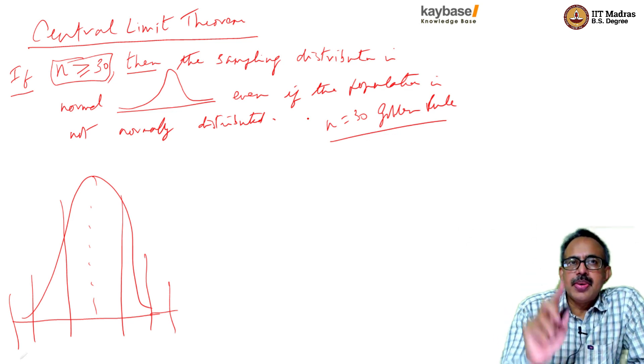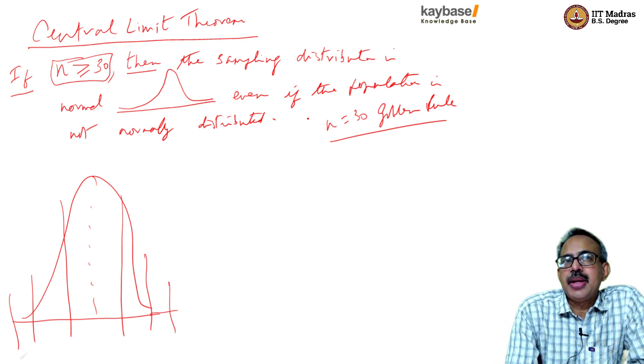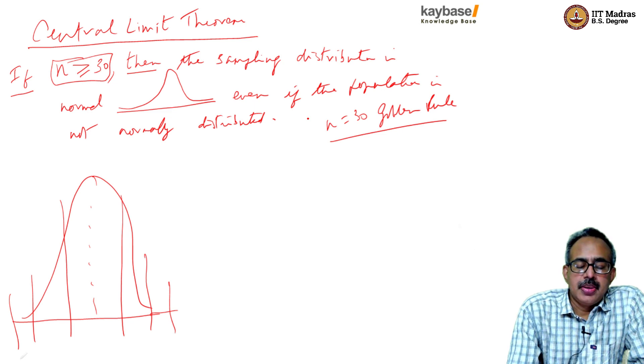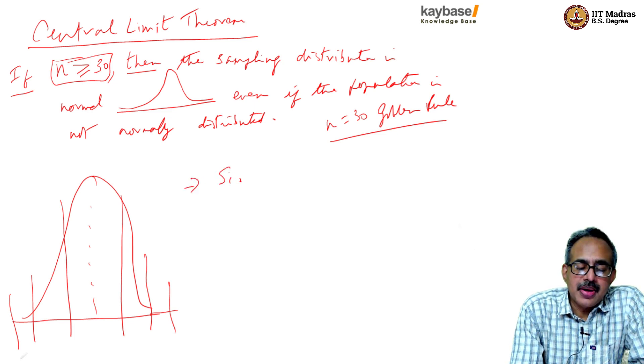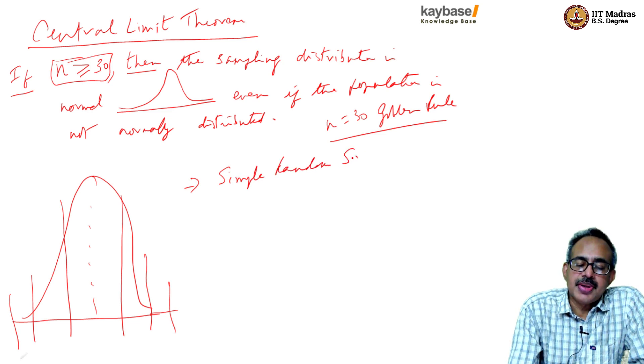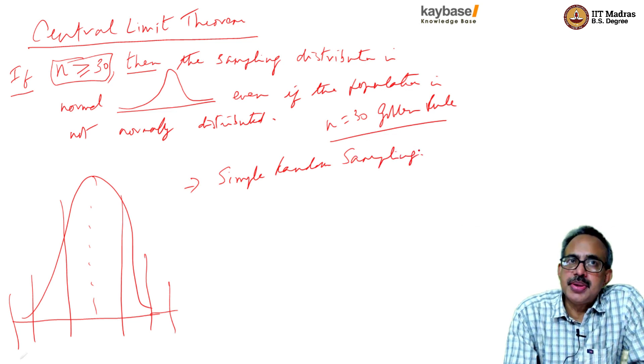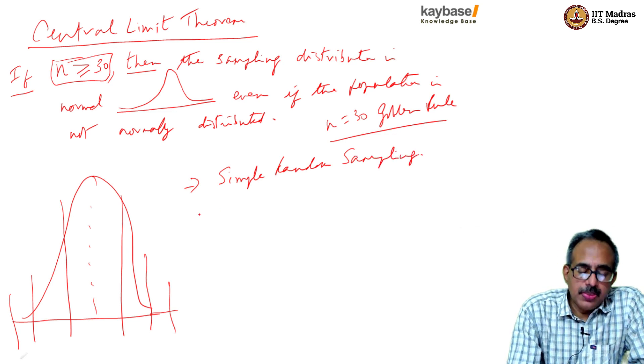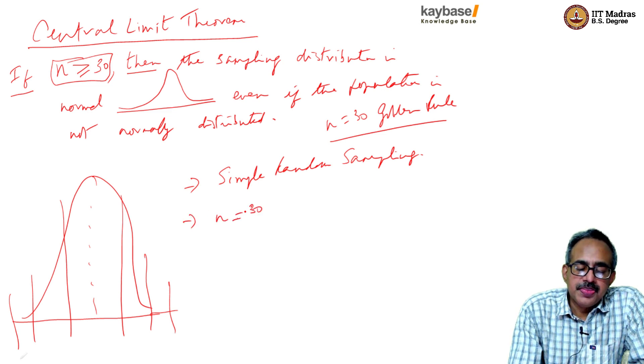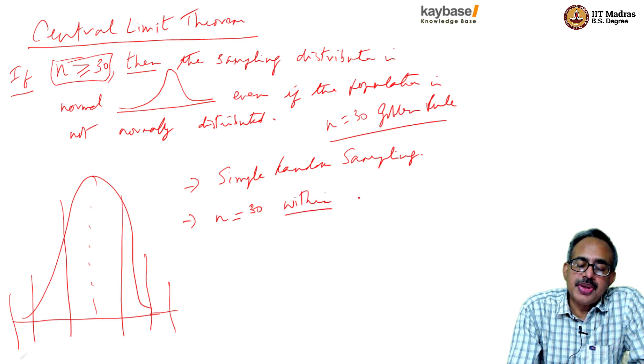There are two conditions here to N equal to 30. We can't blindly apply it. One condition is that these formulas apply to simple random sampling. They don't apply to, say, convenient sampling. They apply only to probability sampling.